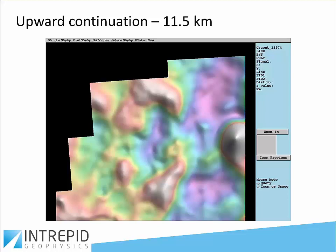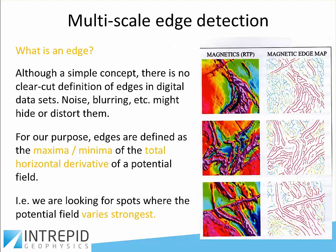Then, really going forward — upward continuing 11 kilometres — all of the surface expression has disappeared and you are seeing deeper structures, perhaps down towards the crust and the bottom of the crust, at least 5 to 8 kilometres deep. These are magnetic sources. That is the principle of upward continuation.